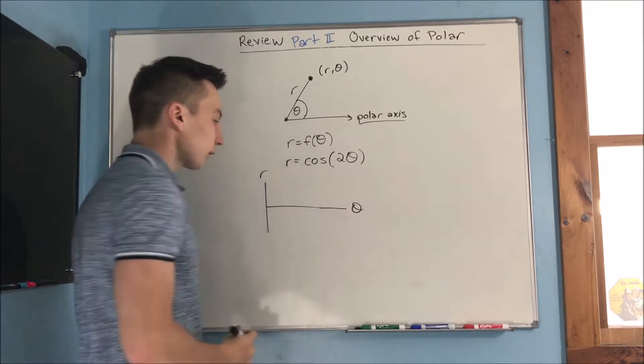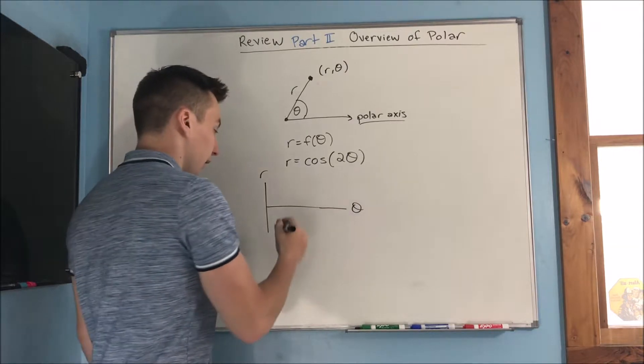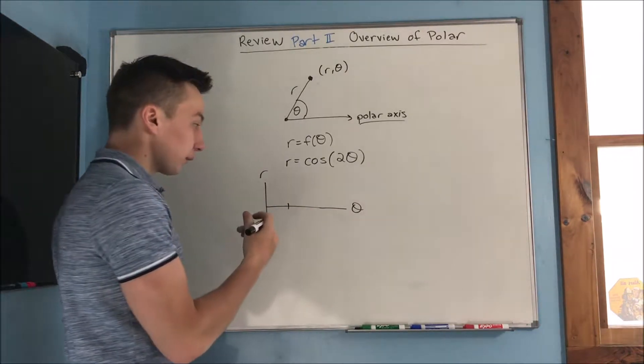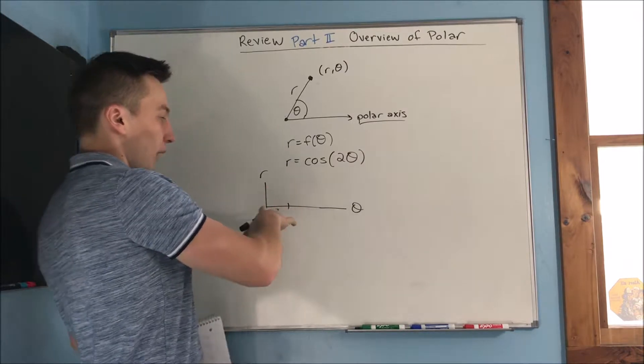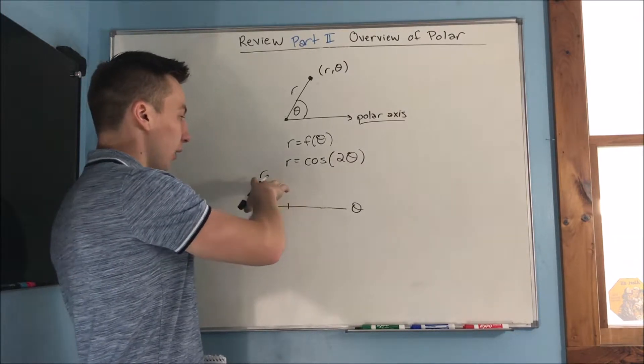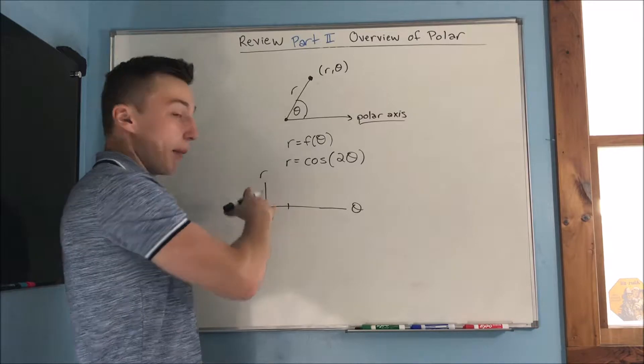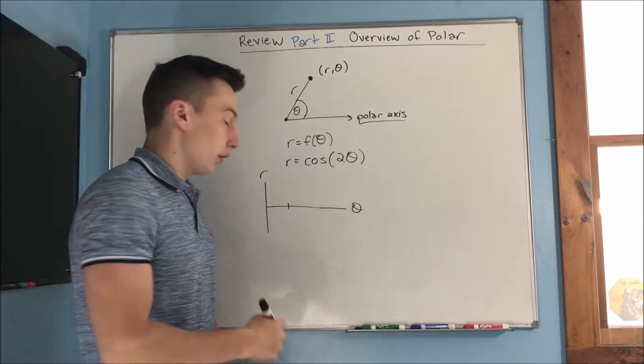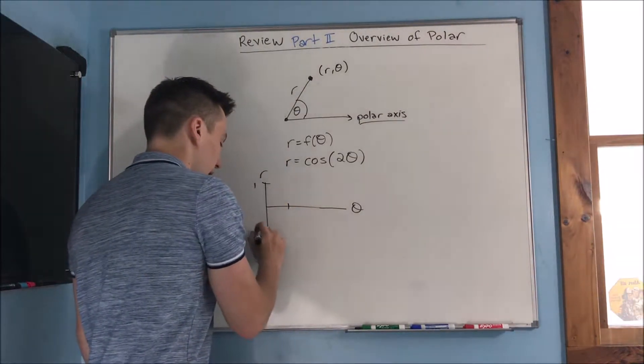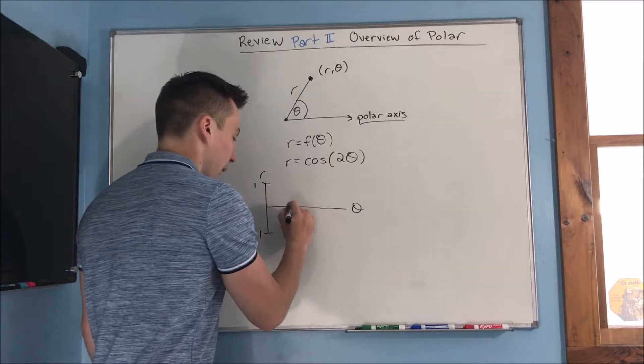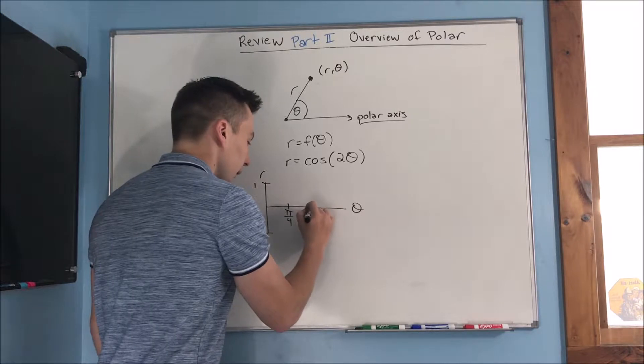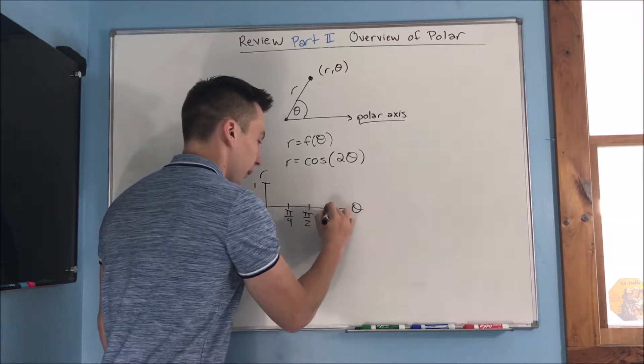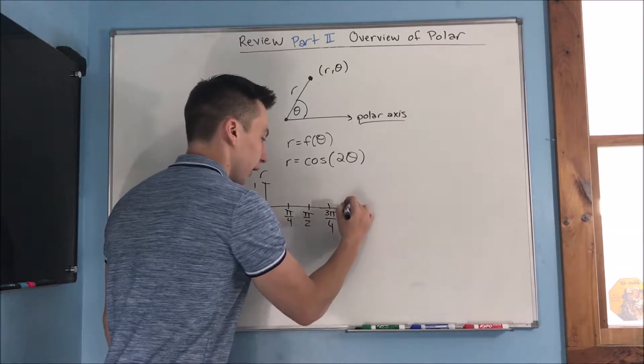And we kind of picked our interval to where theta would make R a max, zero, or a min. So, we would have one up here, negative one down here. We would pick pi over four, pi over two, three pi over four, and pi.